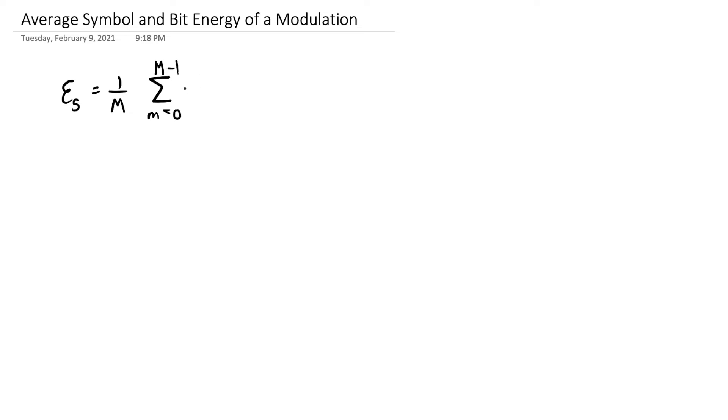The average symbol energy is 1 over m times the sum of all of the magnitude squared of the symbol vectors, and these are s sub m for m equals 0 to m minus 1. And then our average energy per bit is going to take that average symbol energy and divide it by log base 2 of m.